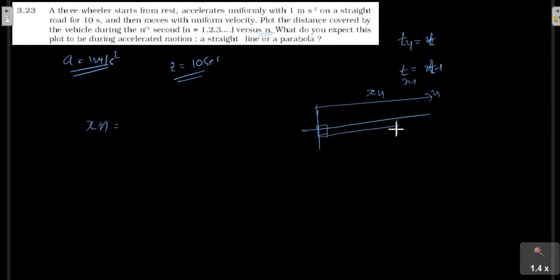For the distance in nth second, xn equals ut plus 1/2 at square, where u equals 0.